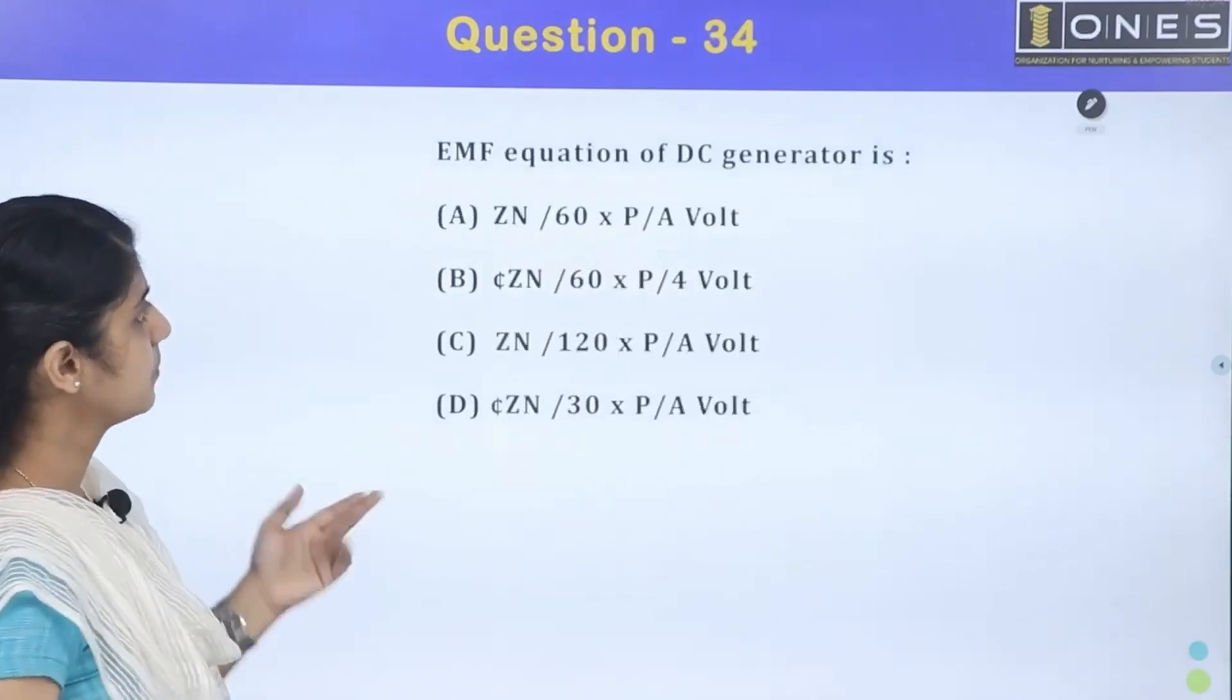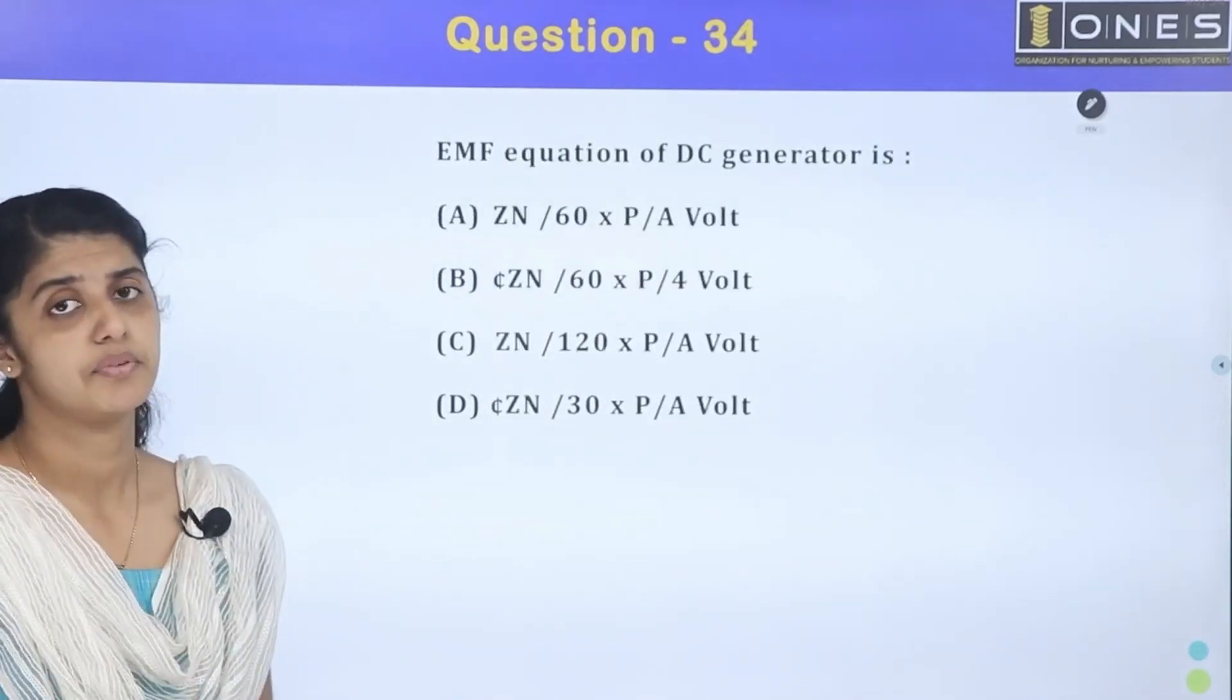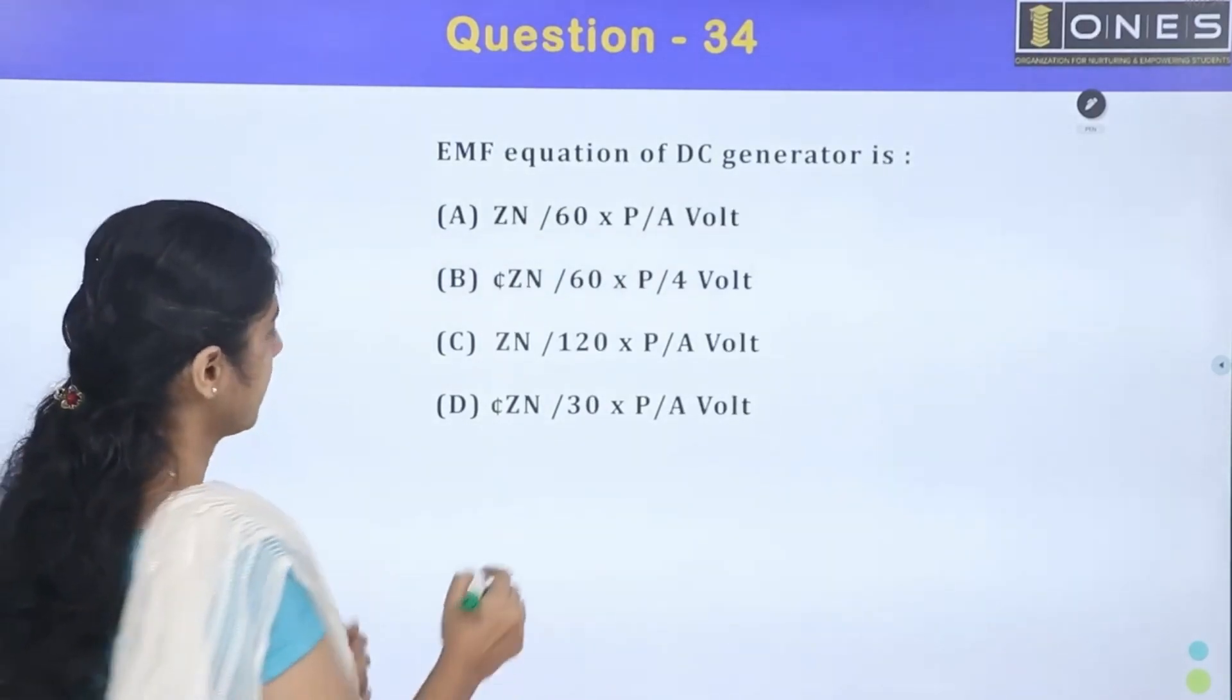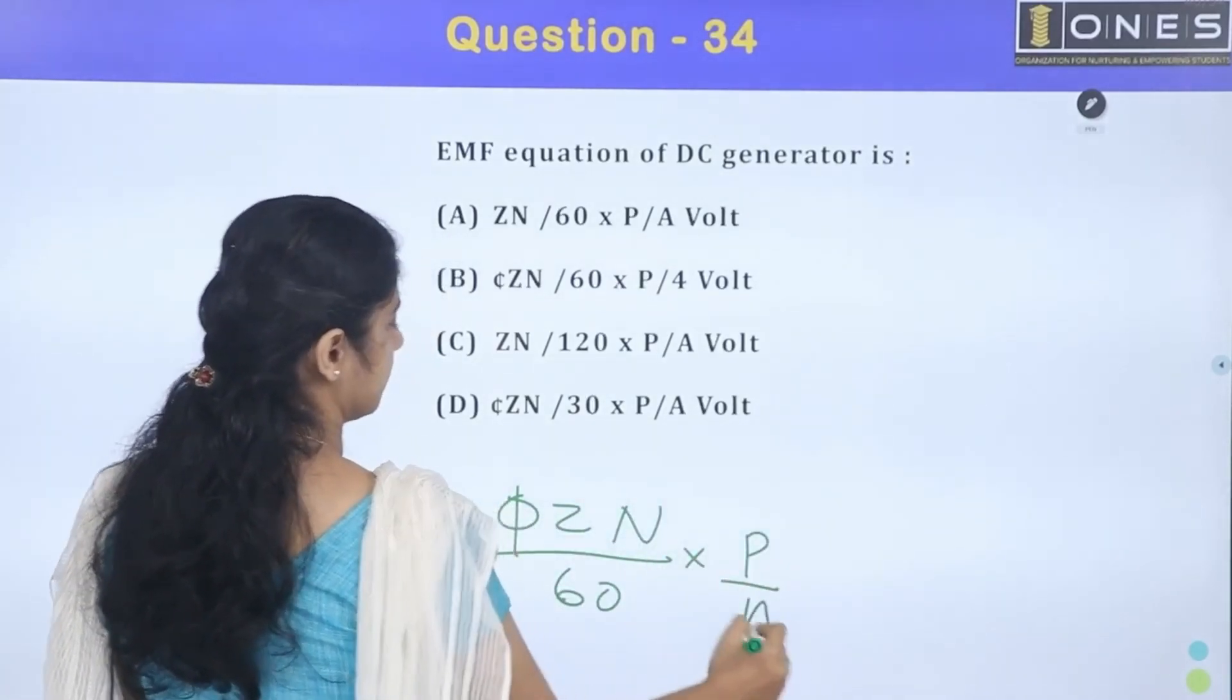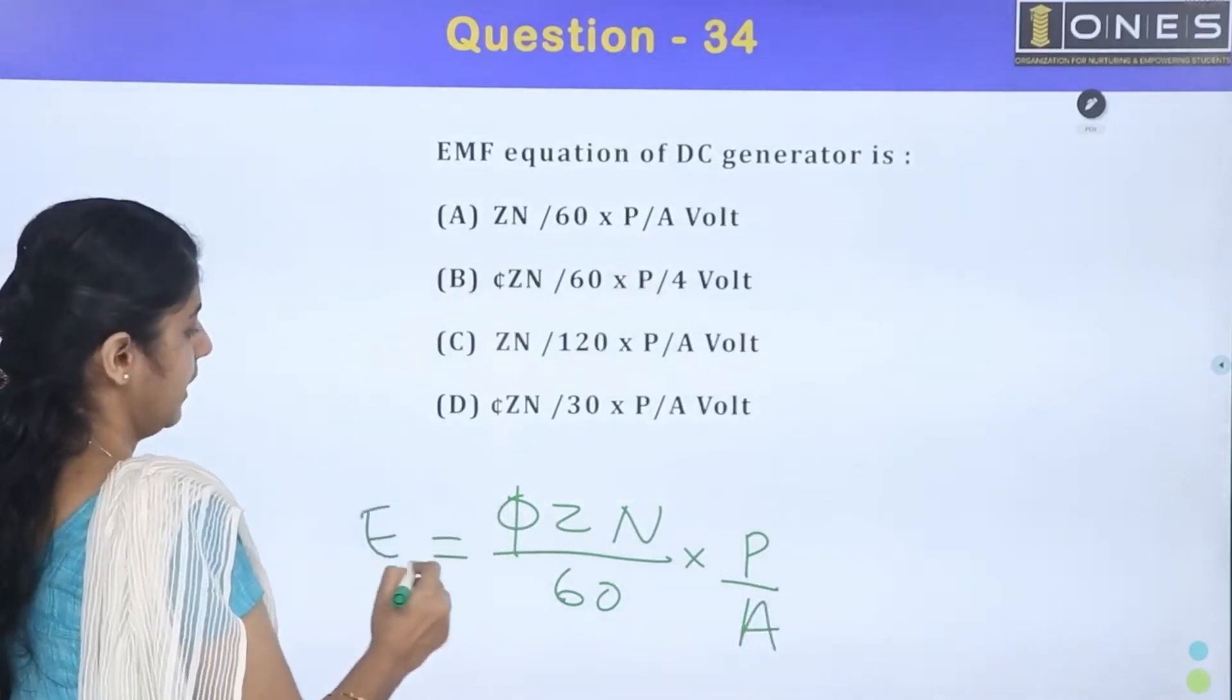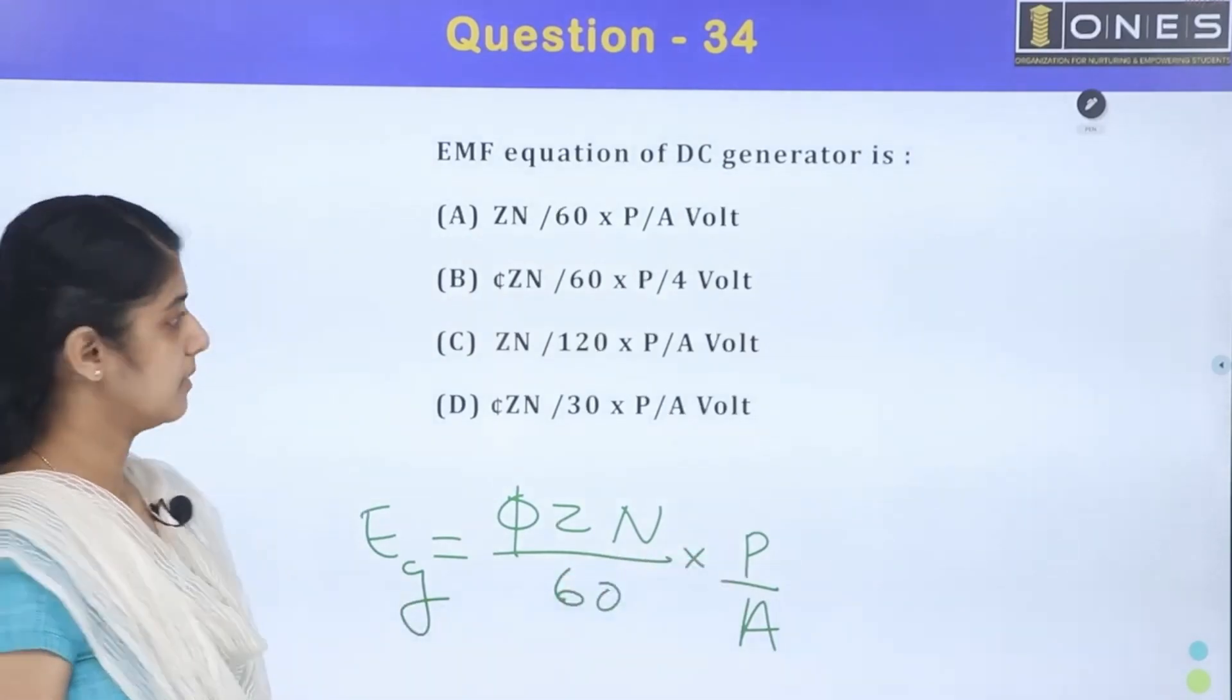Then next one. EMF equation of a DC generator. DC generator EMF equation: E is equal to φZN P/A into 60. This is φZN by 60 into P by A. Now the equation is E is equal to φZN into P/A divided by 60.